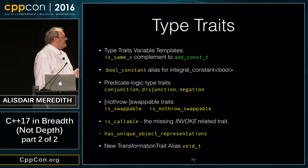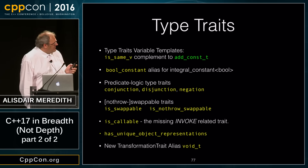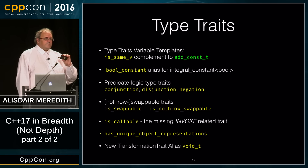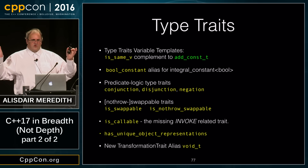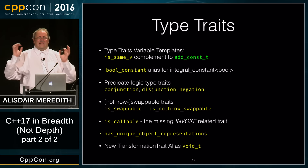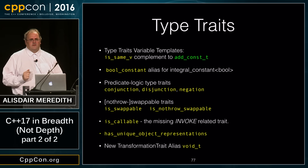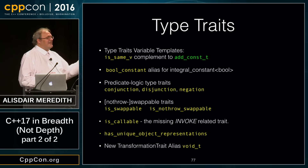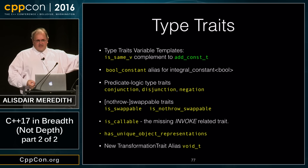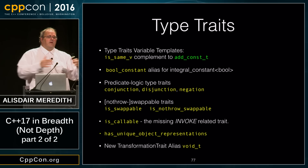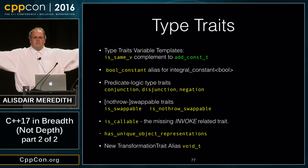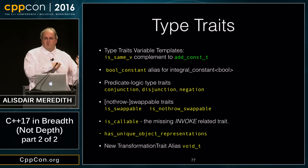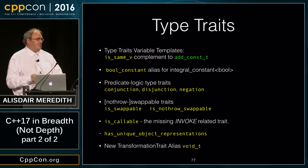has_unique_object_representations simply says all bits in the object representation are part of the value — no padding bits. If a type has this trait, you can use memcmp to test if two objects have the same value, enabling much more optimized low-level algorithms when dealing with large ranges of such types.